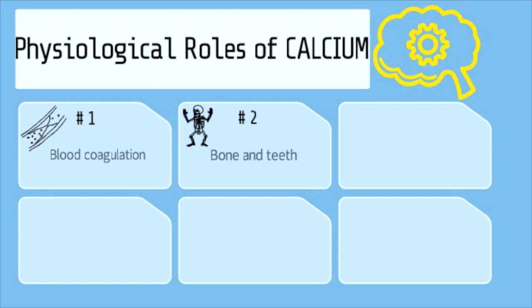3. Calcium controls the impulse generation in the heart, determines the level of automaticity and AV conduction.